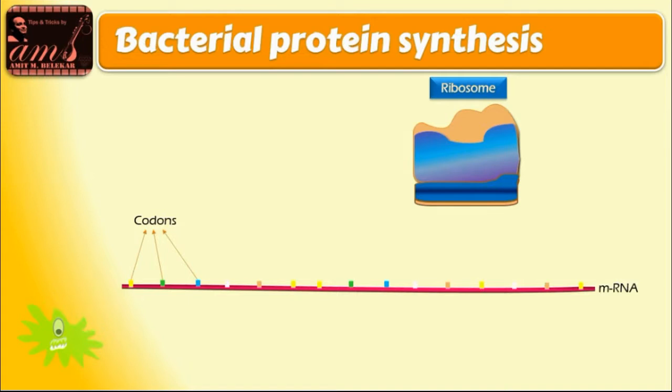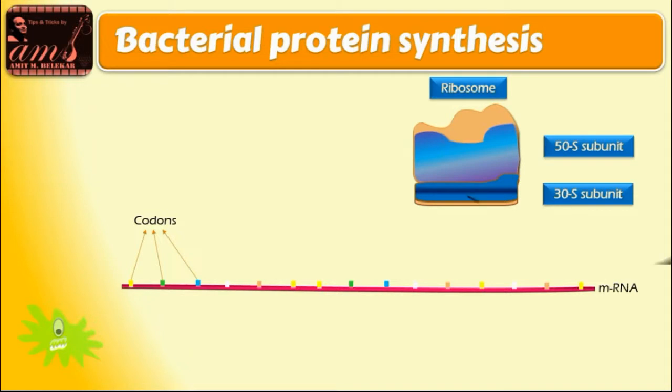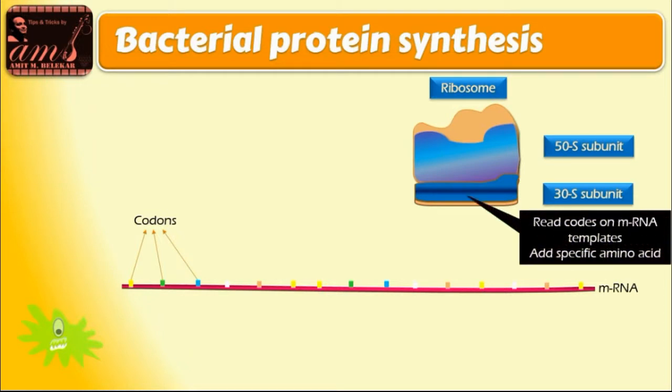Ribosomes have two subunits: a 30S subunit and a 50S subunit. The 30S subunit is responsible for reading codes on mRNA and adding specific amino acids in sequence. Thus, it is responsible for initiation of the process or initial tRNA and ribosome complex formation.